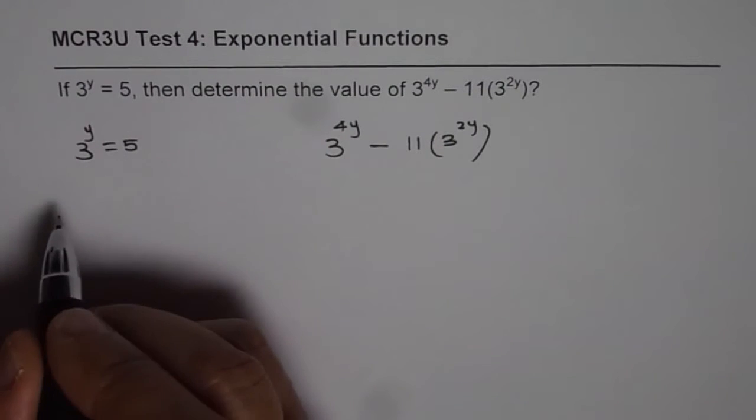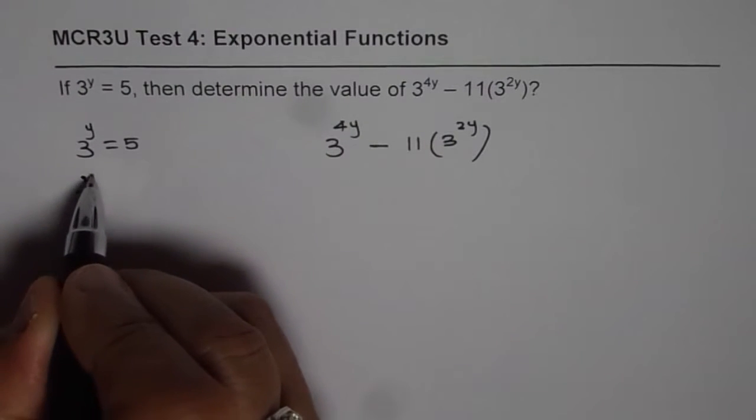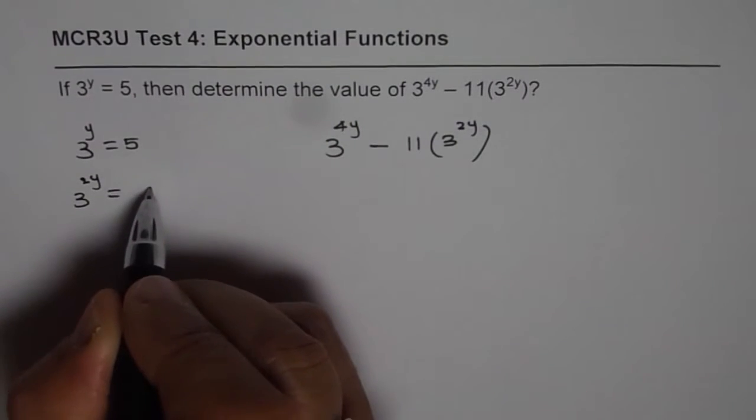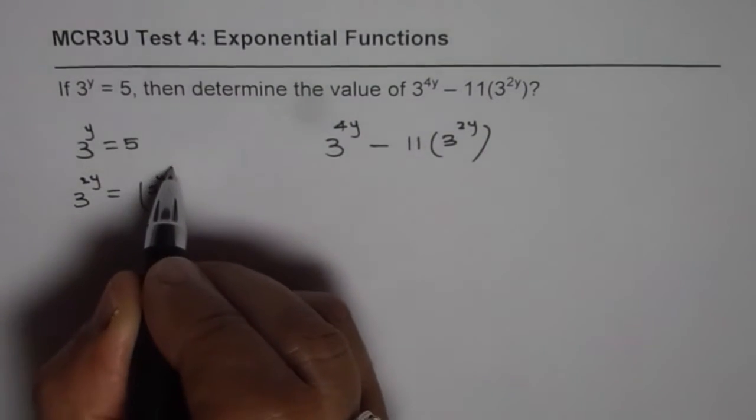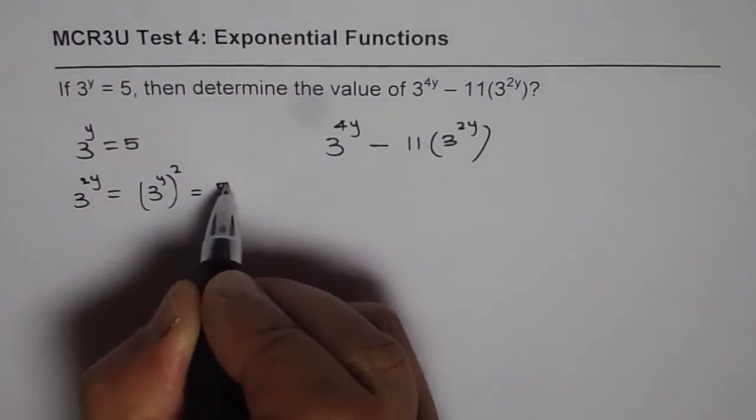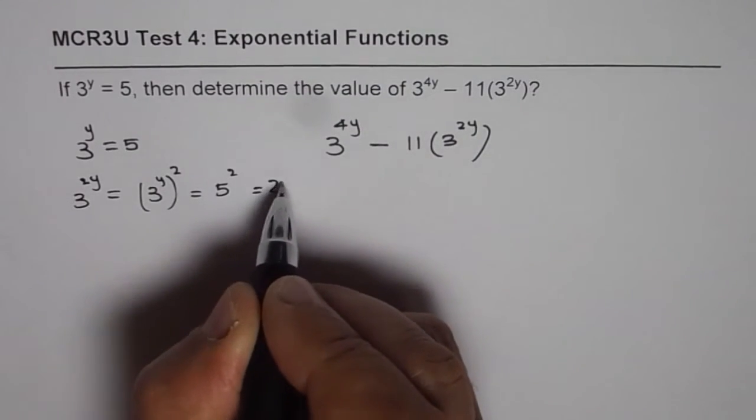Now when 3 to the power of y is equal to 5 what is 3 to the power of 2y equals to? That is 3 to the power of y square right which means 5 square and which means 25.